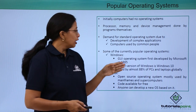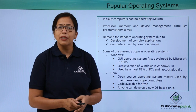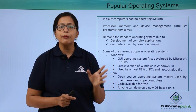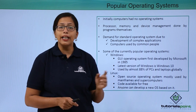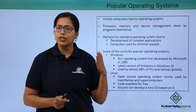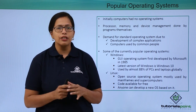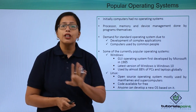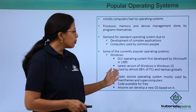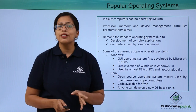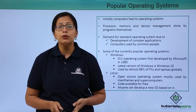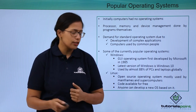The first one was Windows — a GUI operating system, that is a graphical user interface system, introduced by Microsoft in 1985. It has small icons which could just be clicked to open a program. It was very easy to use and very easy to navigate. It is currently used by almost 88% of PCs and laptops globally, which tells you how easy to use it is.